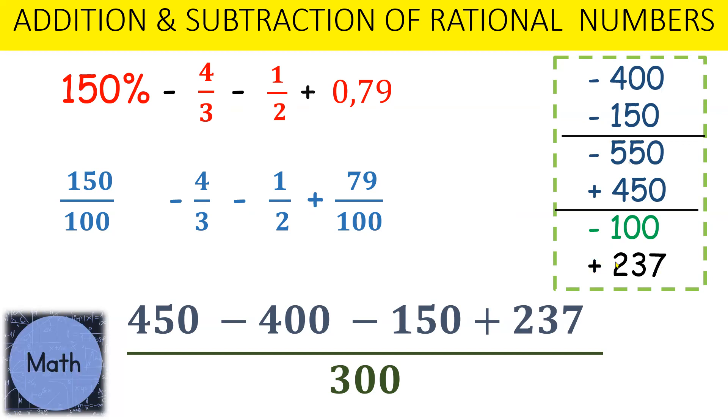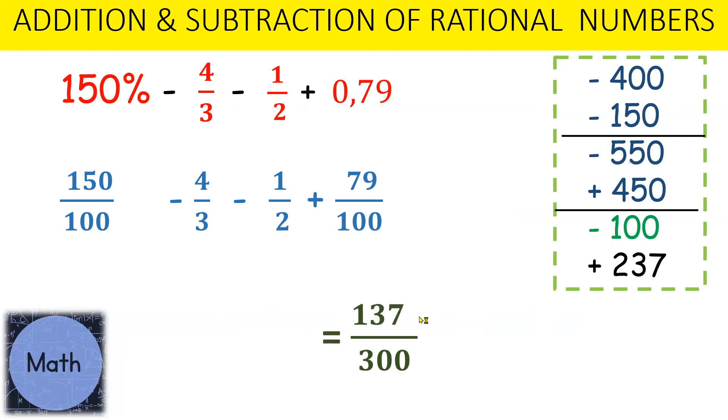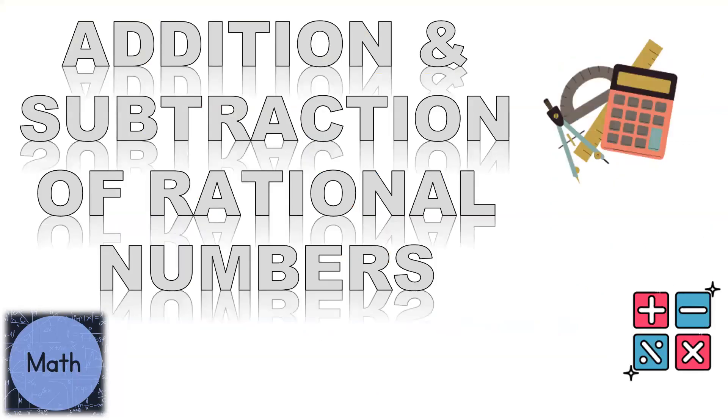237 is a larger value, so the answer will be positive, and if we take 100 off 237, it will give us 137. So our final answer is 137 over 300. Thanks for watching this video for the addition and subtraction of rational numbers.